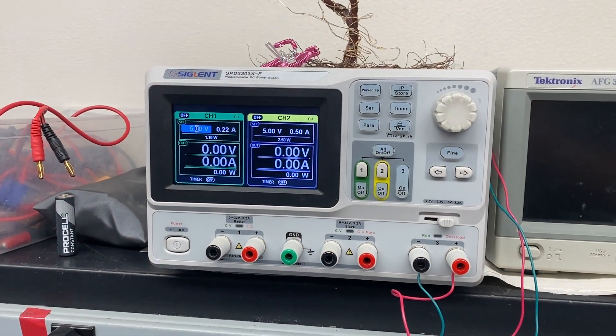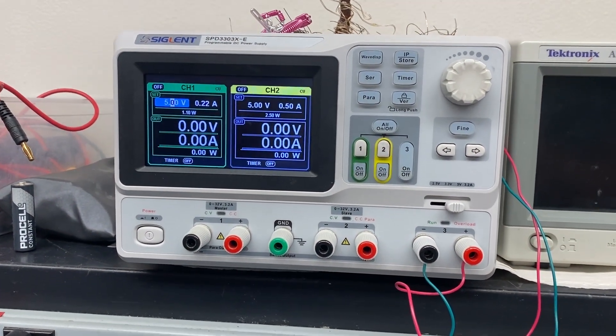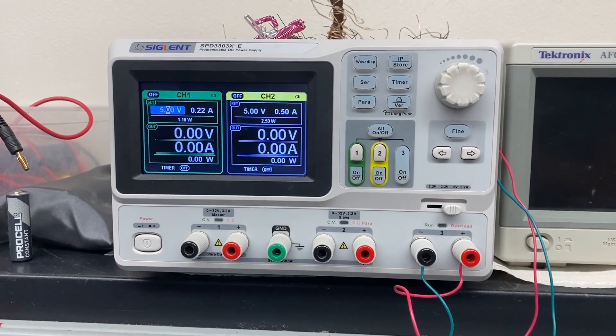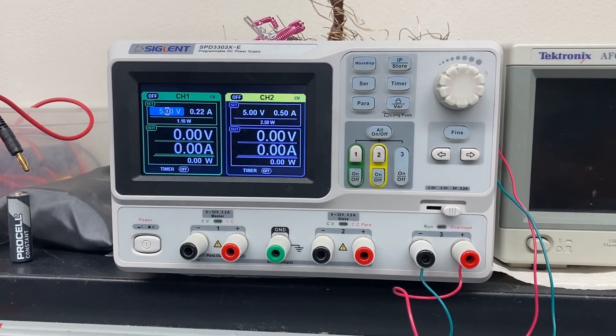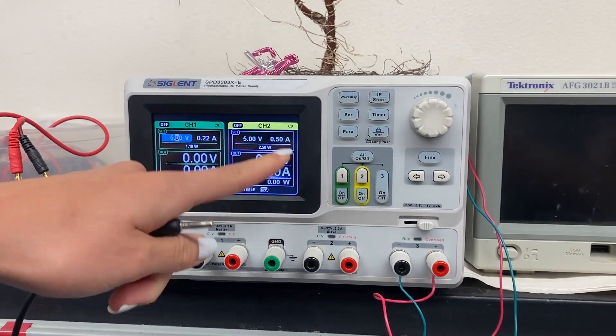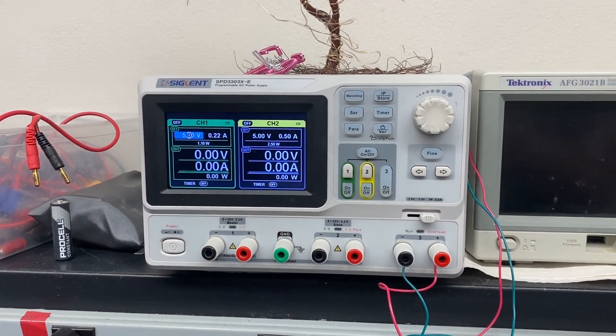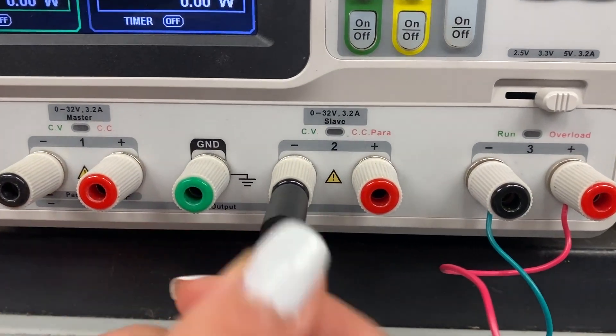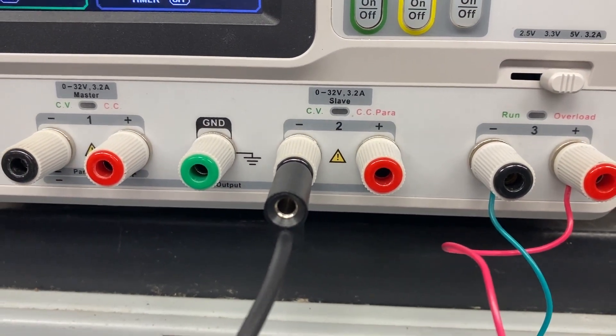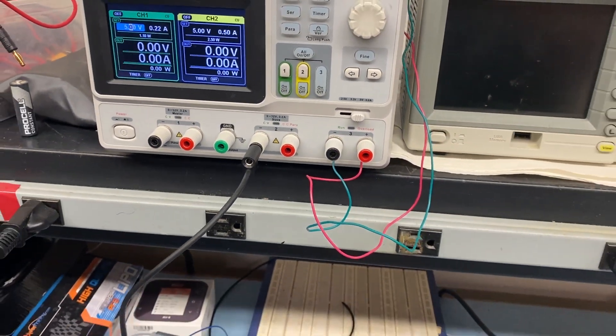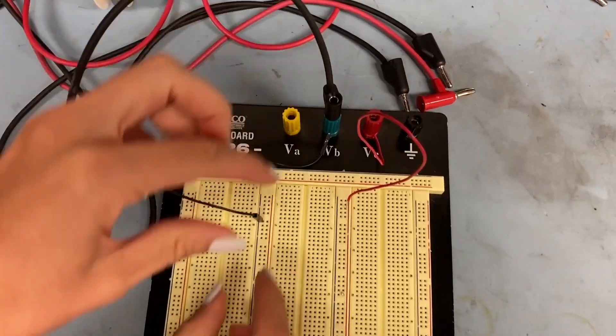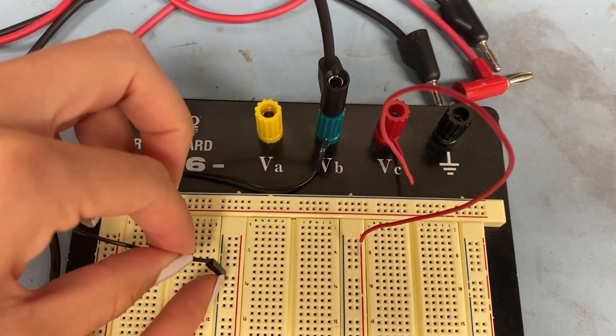So now I'm going to go to the connections. You want to make sure that you get this right, so just double check your connections after. Channel 2 is going to be my negative 5 volts, so I will be connecting the negative terminal to my breadboard. In this case I'll be using a breadboard to show you how it works. So I connect that to my negative. This is going to be negative 5 volts.